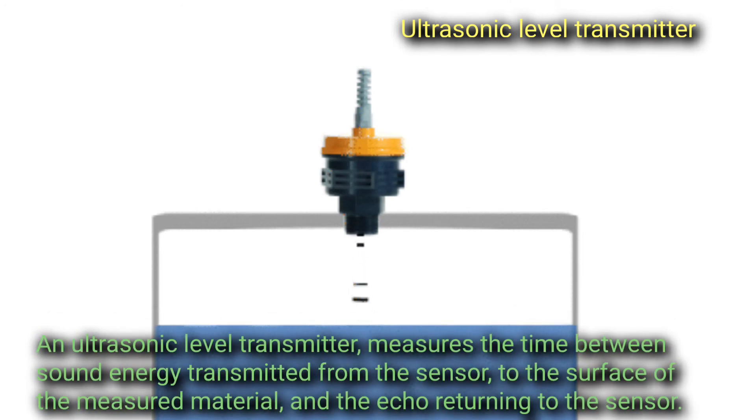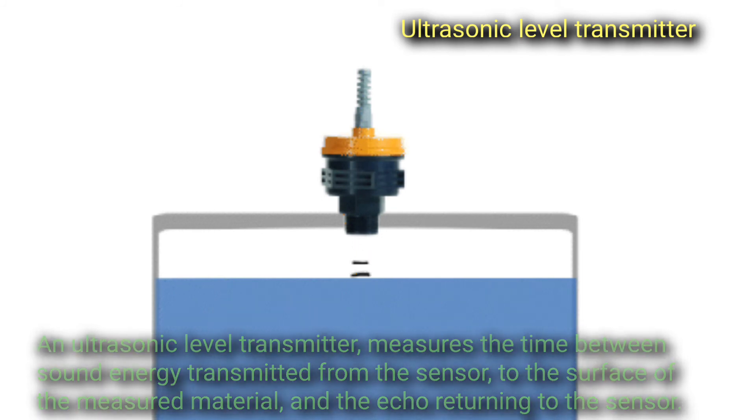An ultrasonic level transmitter measures the time between sound energy transmitted from the sensor to the surface of the measured material and the echo returning to the sensor.